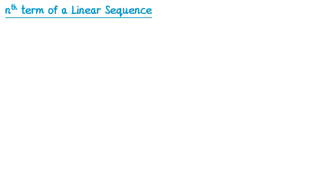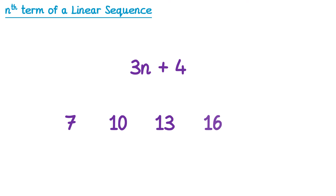In the previous video, we learnt how to generate a sequence from an nth term. For example, if we had 3n plus 4 and we generated the sequence, it would be 7, 10, 13, 16, 19. In this video we're going to start with the sequence and see if we can work backwards to work out what the nth term was.